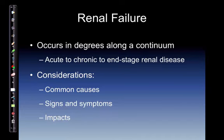Renal failure occurs in degrees along the continuum, so we can have all phases of renal failure. Common cause is hypoperfusion or low perfusion. Intrarenal causes of acute renal failure include both primary glomerular nephritis — an example would be from lupus or systemic lupus erythematosus, caused by all the inflammation it produces — and secondary glomerular nephritis, which would be due to an infection.